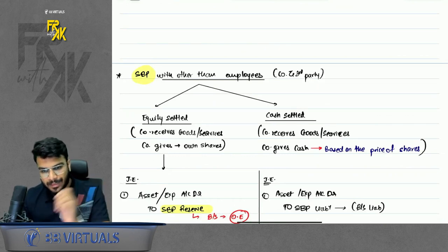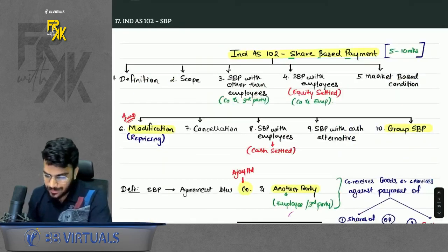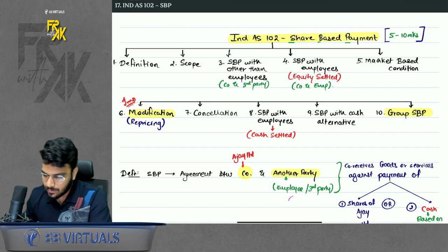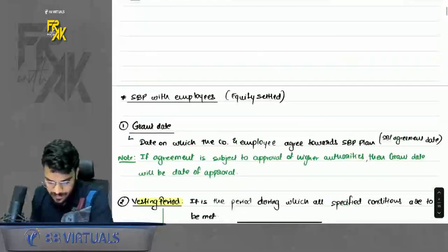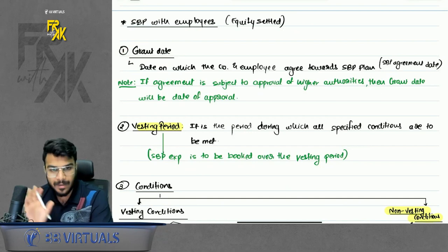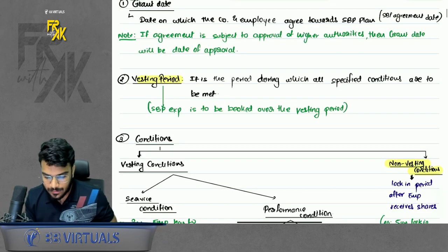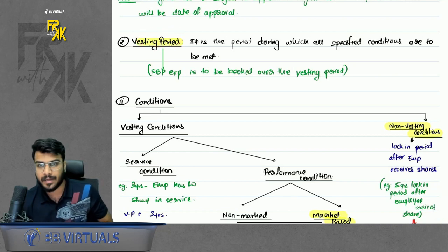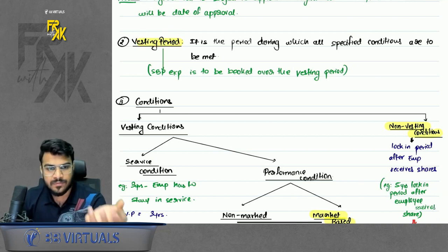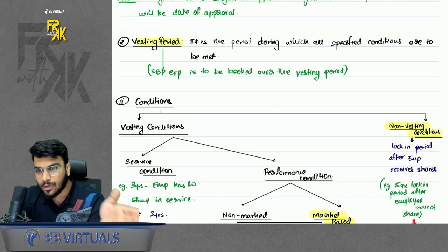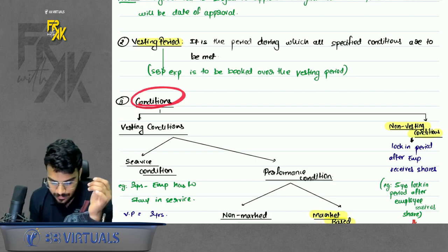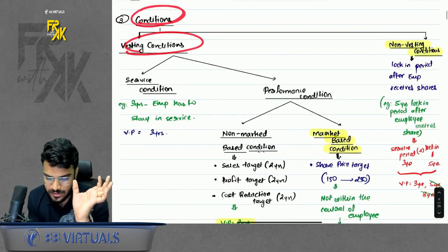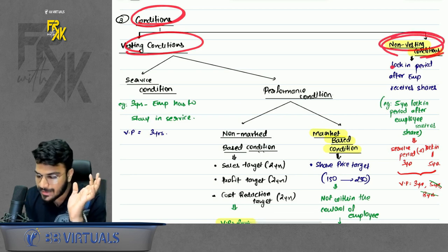The measurement basis per Index 102: first preference is fair value of the asset or service acquired. If unavailable, second preference is fair value of shares given up. This is contrary to what is discussed in Index 38/40. Now for share based payment with employees — equity settled — the key term is grant date, which is the agreement date.